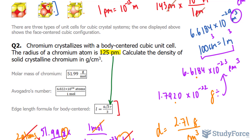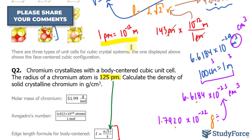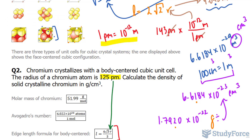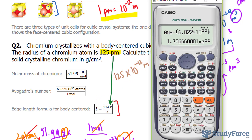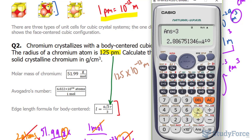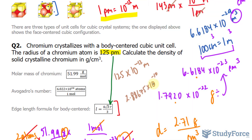The conversion from picometers to meters: 1 picometer equals 10⁻¹² meters, so 125 picometers equals 125×10⁻¹² meters. Substituting into the formula: a = 4 × √3 × 125×10⁻¹² / 3, giving an edge length of 2.8867×10⁻¹⁰ meters. Since the volume of a cube is length cubed, we raise this edge length to the power of 3.